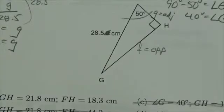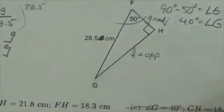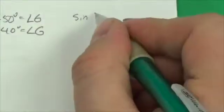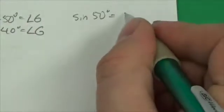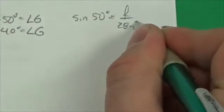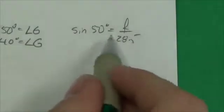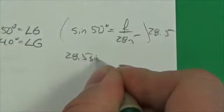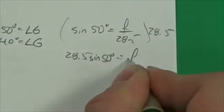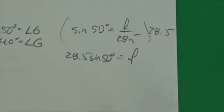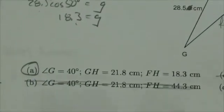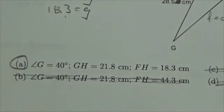We might run through quickly and verify that by using the sine ratio to get the opposite side. If we set up the sine ratio: sine of 50 degrees is going to equal f over 28.5. To get f, multiply both sides by 28.5 — so 28.5 times the sine of 50 equals f. Doing that on the calculator gives 21.8, which is exactly what we were looking for. So the answer was, in fact, A.